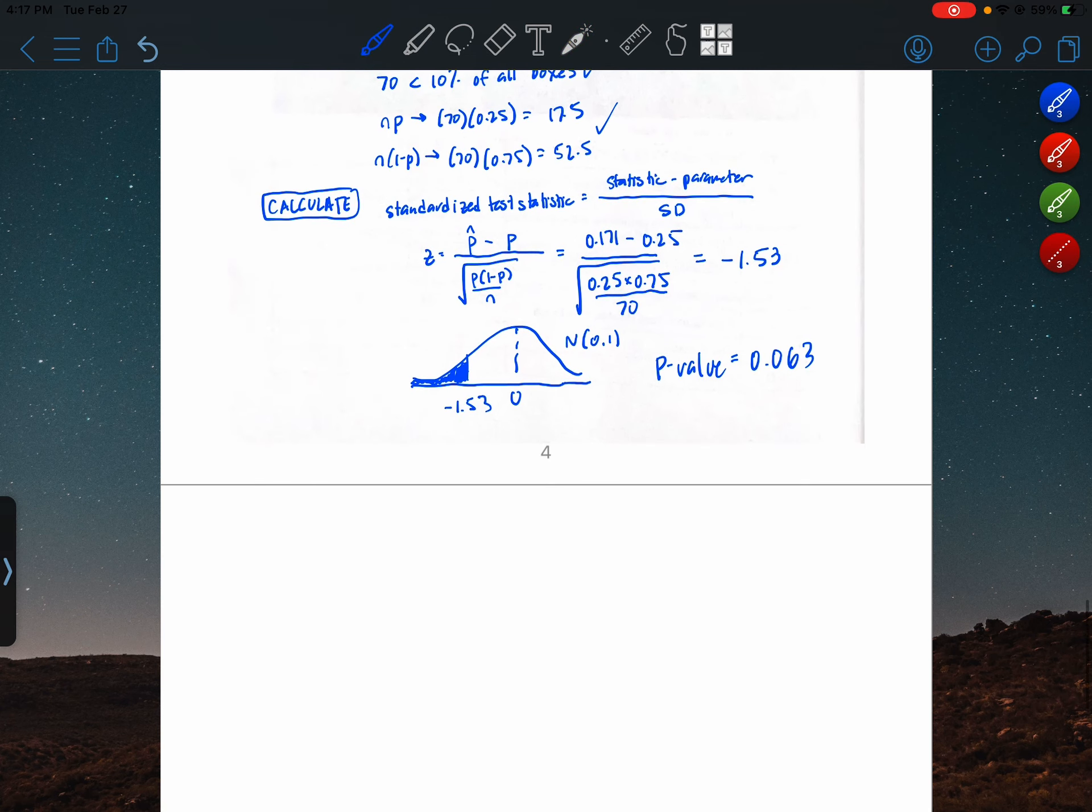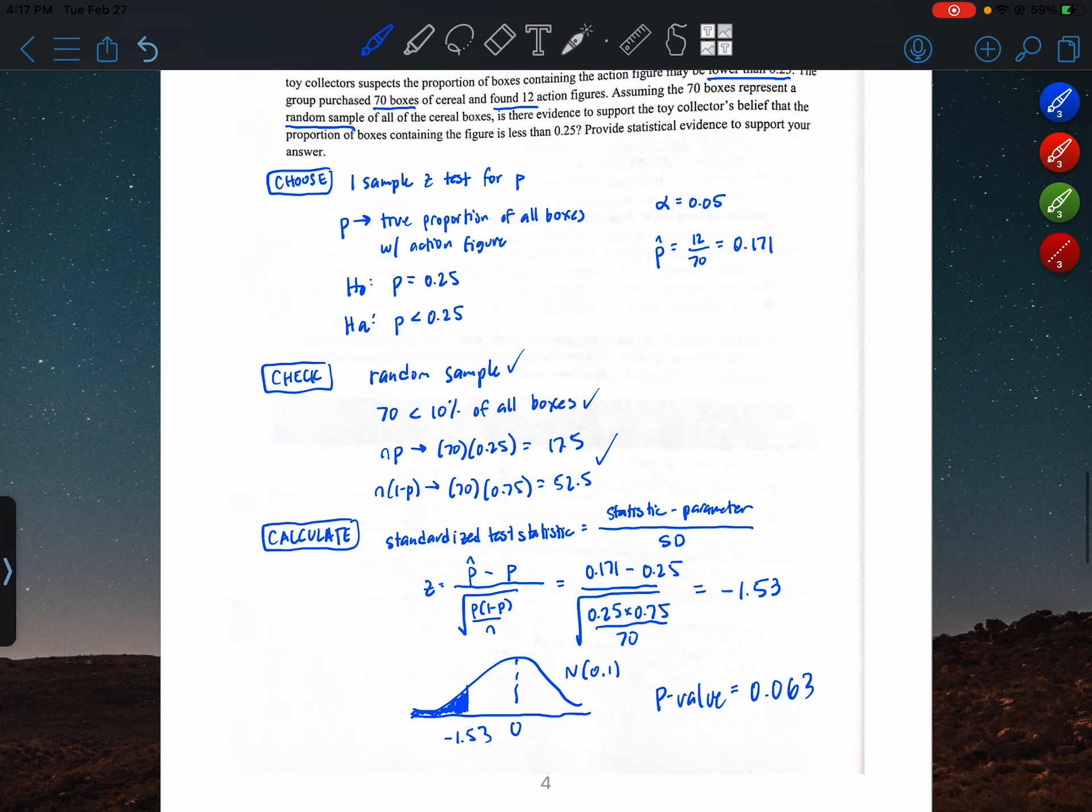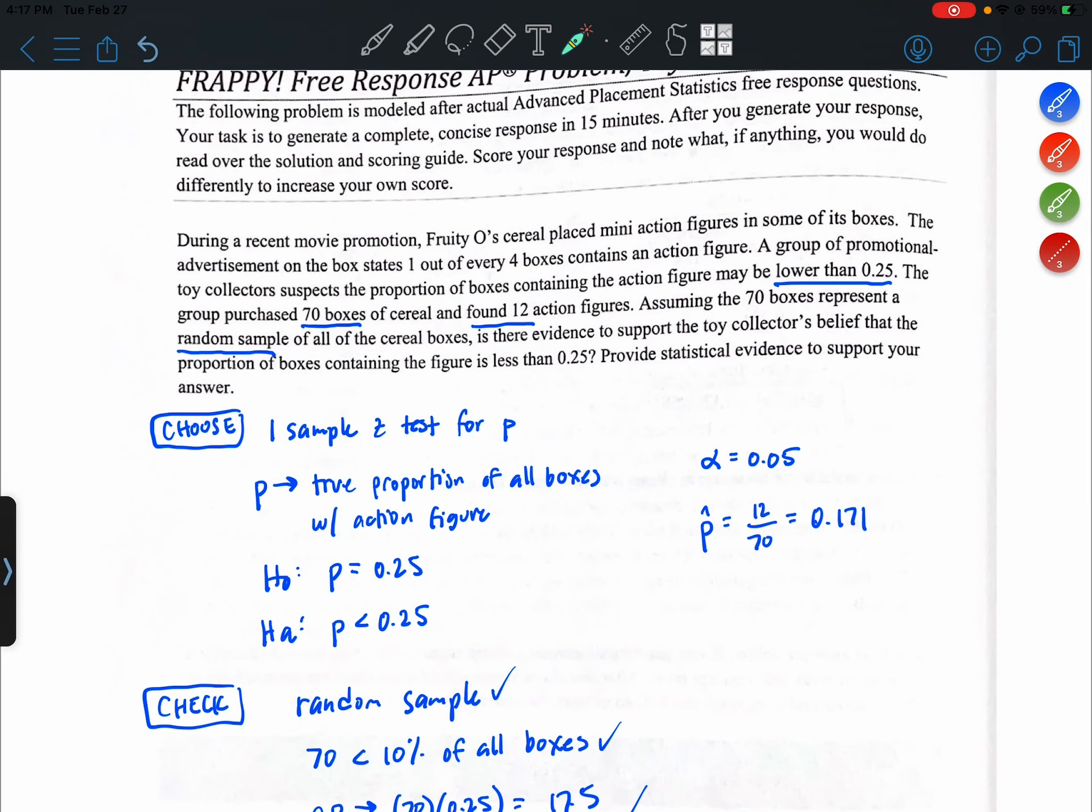We're just going to write all that in context now. Since the p-value 0.063 is greater than our significance level of 0.05, we fail to reject the null hypothesis. We do not have convincing evidence that the proportion of boxes containing the figure is less than 0.25.